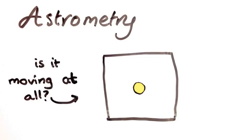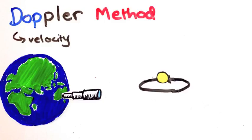That's why the second method, called the Doppler method, isn't about measuring the star's position, but its velocity. Think about it like this. When the star is over here, it's moving towards us.